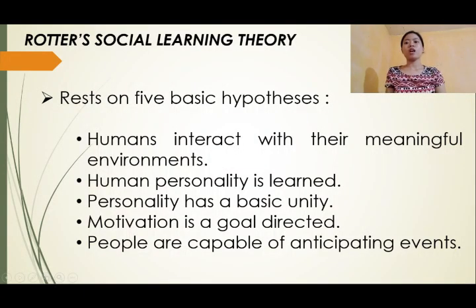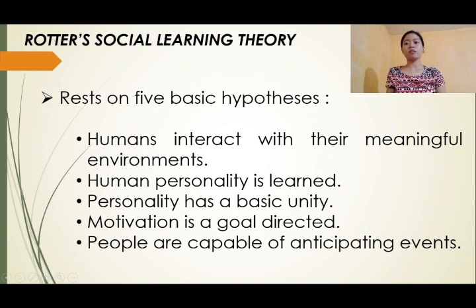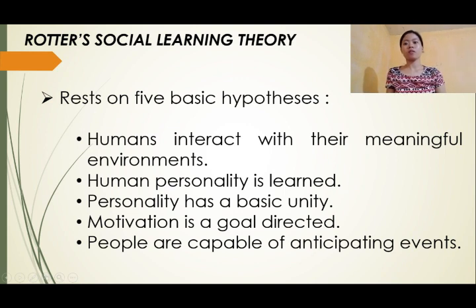Introduction to Rotter's Social Learning Theory. The theory rests on five hypotheses: humans interact with their meaningful environments, meaning human behavior stems from the interaction of environmental and personal factors. Human personality is learned, which suggests it can be changed or modified as long as people are capable of learning. Personality has a basic unity suggesting some basic stability, and motivation is goal-directed — people are capable of anticipating events and thus capable of changing their environment and personality.